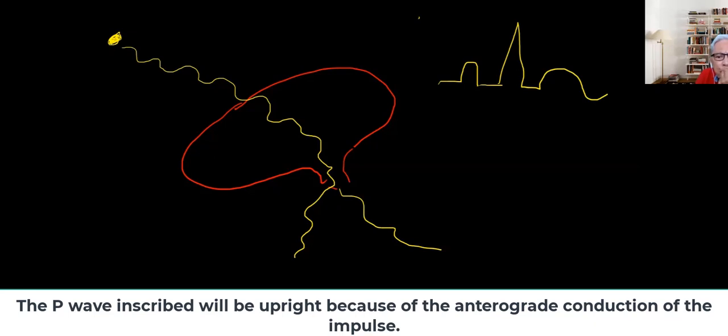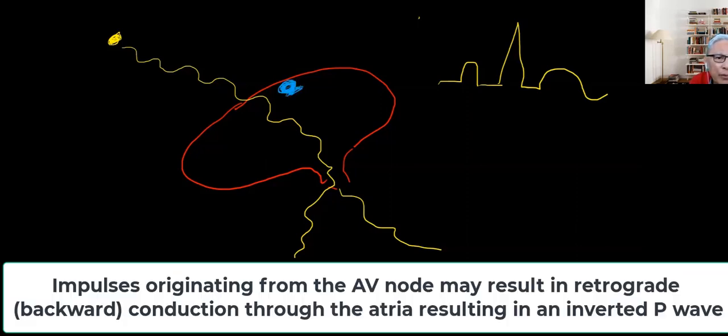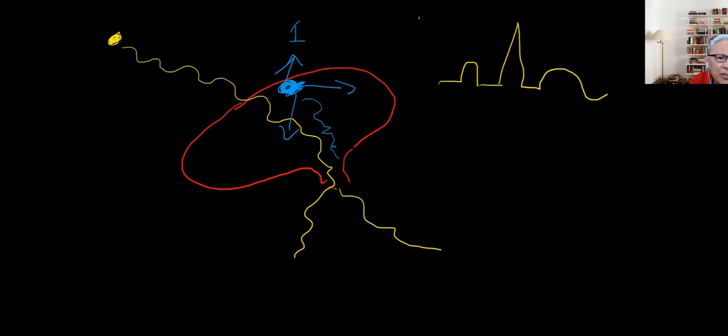If we have an impulse that originates from the AV node rather than the sinus node, so it comes from here, it generates an electrical spark. The spark goes this way, the spark goes that way, and this way. Which one is activated first, is it going to be the atrium, or is it the ventricles?